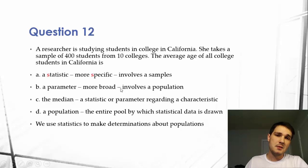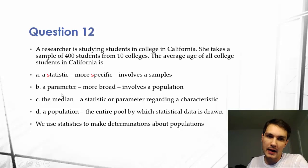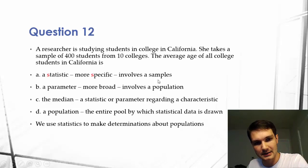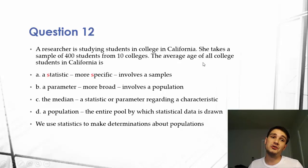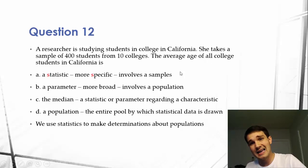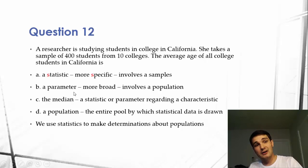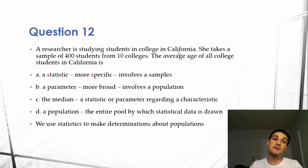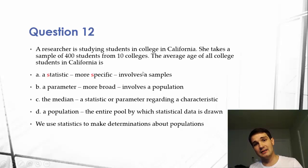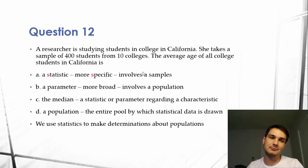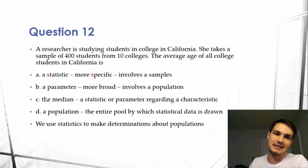So B is going to be the answer because it involves a population. Parameters involve a population — the P's stick together. It's more broad. All of the college students in California is the population, and the information we have about that is a parameter. A lot of times we get this information based off of inferences we make in our statistics. They're all related, but you have to get the difference between populations and samples — they're extremely different. They sound similar, but they're very different. Get it down.